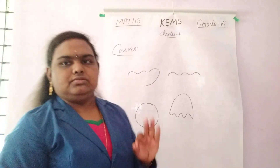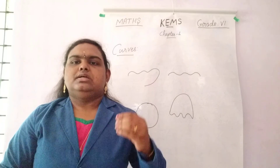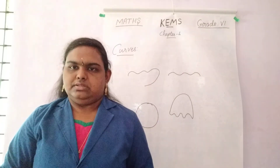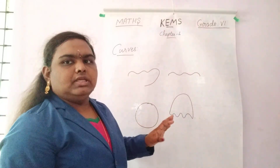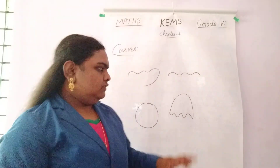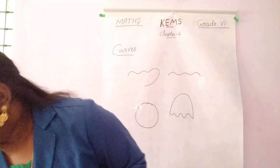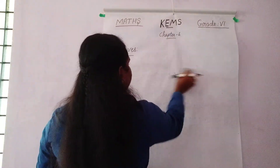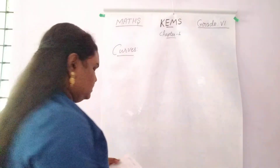So these are the three types. First one is the simple curve. Closed curve is nothing but it will be fully covered with the figure. Then we have learned simple curve, open curve, and closed curve.